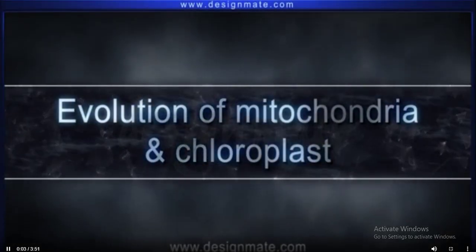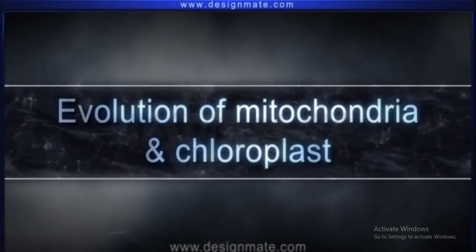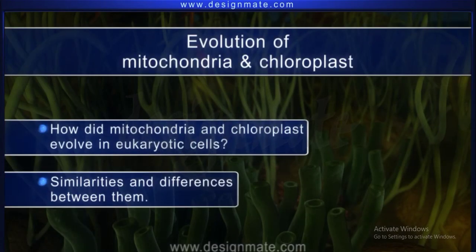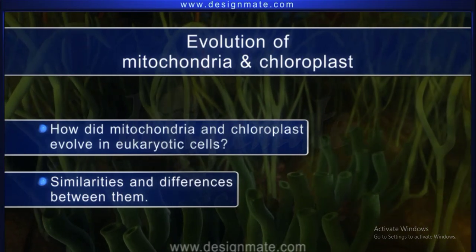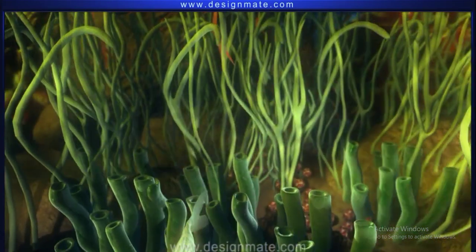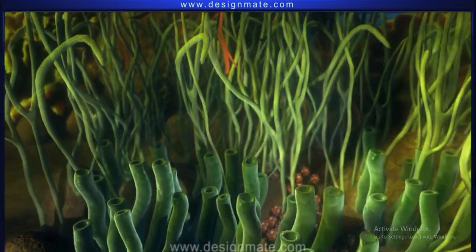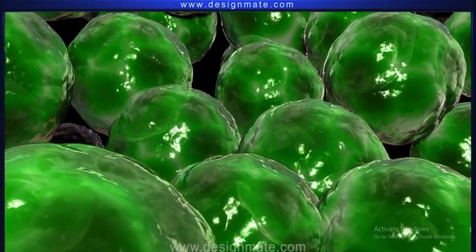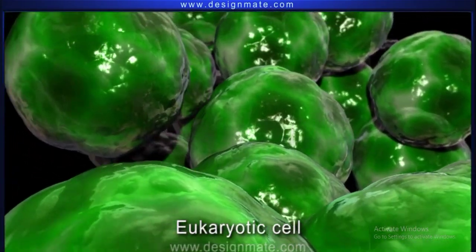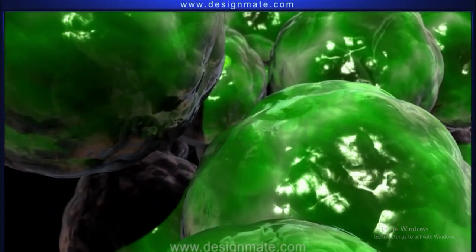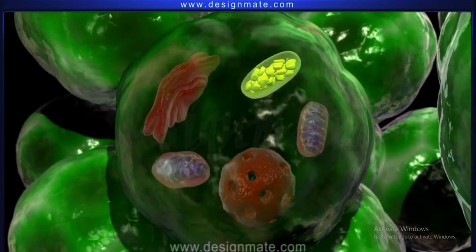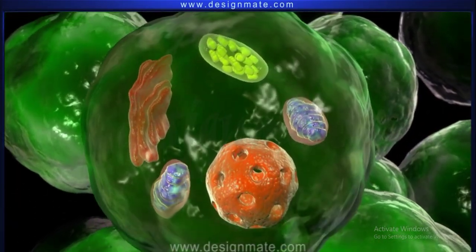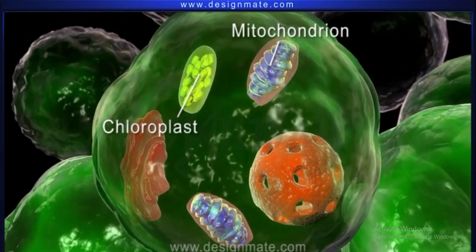Evolution of Mitochondria and Chloroplast. Objective: How did mitochondria and chloroplast evolve in eukaryotic cells? We will also explore the similarities and differences between them. A zoomed-in view of an aquatic plant shows numerous eukaryotic cells. If we focus our attention on a single cell inside it, we observe organelles like chloroplast and mitochondria.